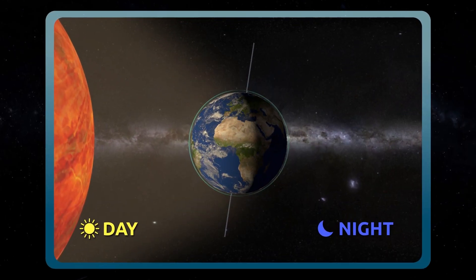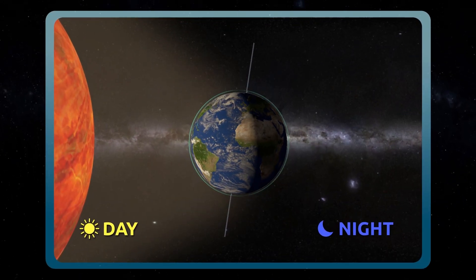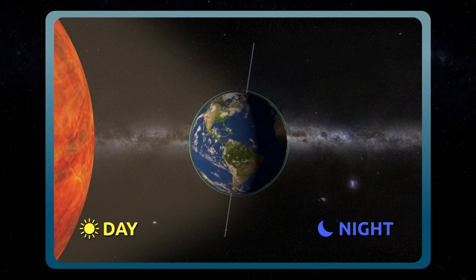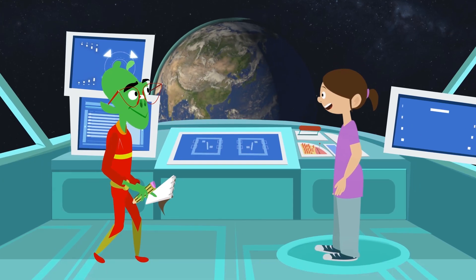Rotation explains day and night. As you can see, it's daytime in the part of the Earth that faces the Sun and nighttime on the dark side. Do you understand?